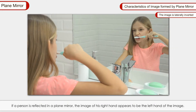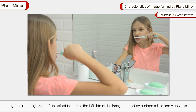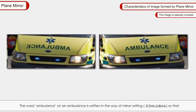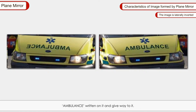The image is laterally inverted. If a person is reflected in a plane mirror, the image of his right hand appears to be the left hand of the image. In general, the right side of an object becomes the left side of the image formed by a plane mirror and vice versa. This interchange of sides is called lateral inversion. The word 'AMBULANCE' on an ambulance is written in mirror writing so that when a driver ahead looks in their rear view mirror, they can read it and give way.